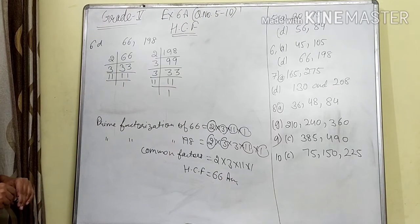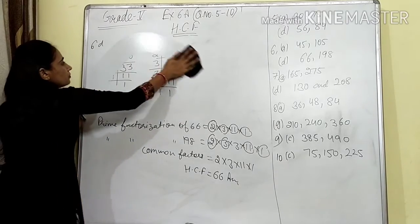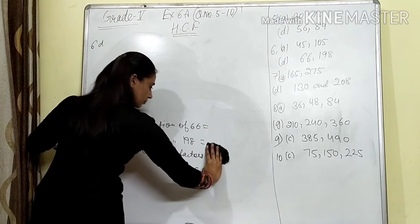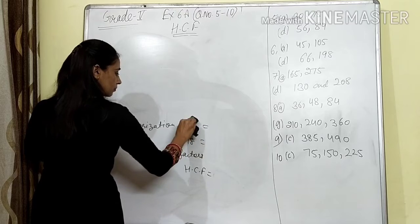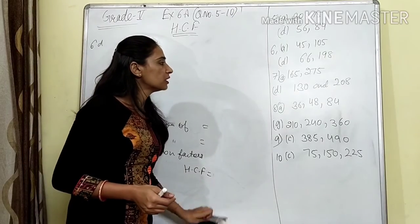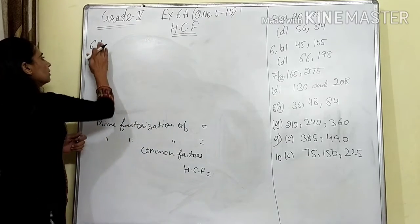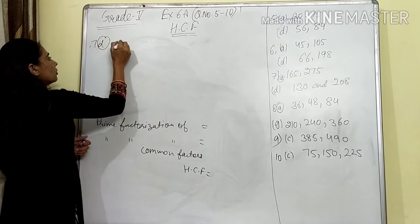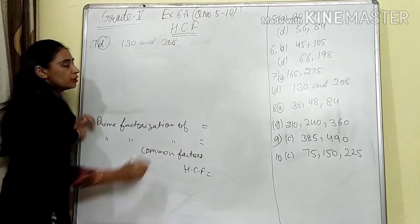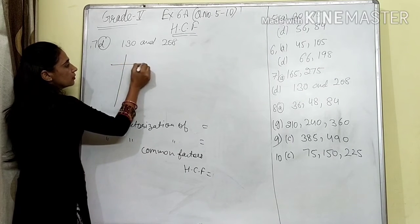Now we will do question number 7, D part. In question number 7, D part, what is given to us? It is 130 and 208. So write question number 7, D part: 130 and 208. Here we have to do the prime factorization.